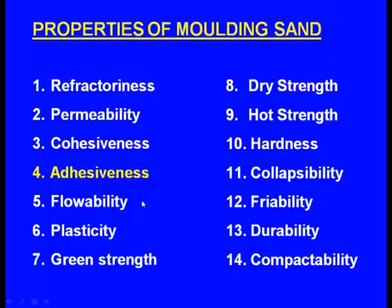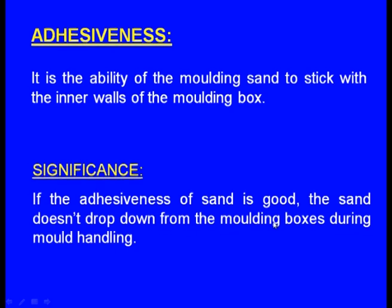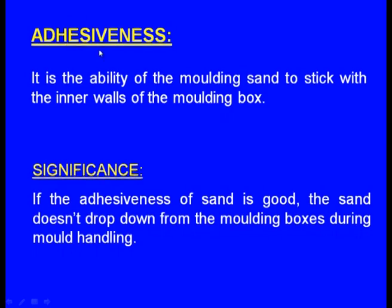Next is adhesiveness. It is the ability of the molding sand to stick to the inner walls of the molding box. Cohesiveness is the binding between sand particles, whereas adhesiveness is the binding between sand particles and the walls of the mold box. If the adhesiveness of the sand is good, the sand does not drop down from the molding box during mold handling. If there is no adhesiveness, when we carry the molding box, the mold may suddenly drop down, as there is no binding between the molding sand and the walls.